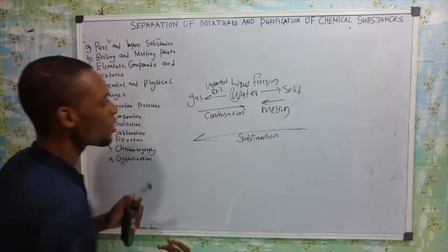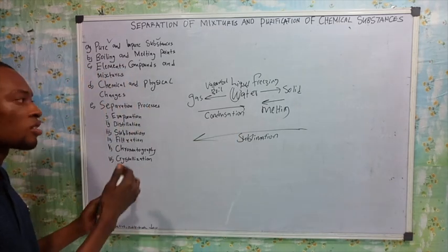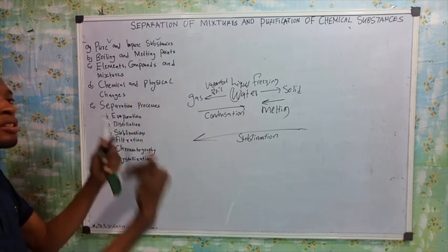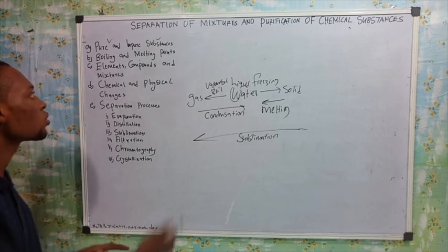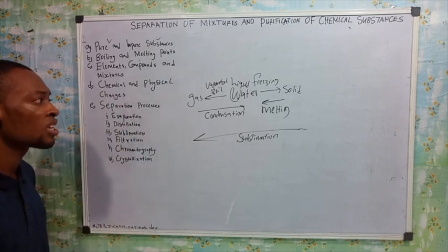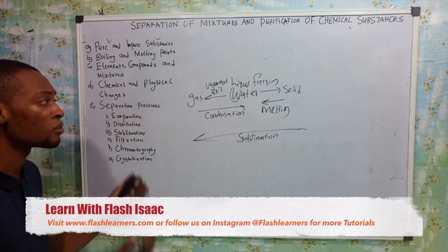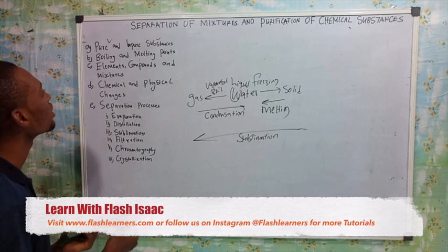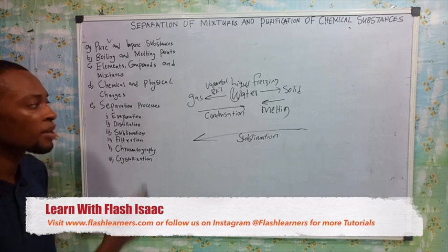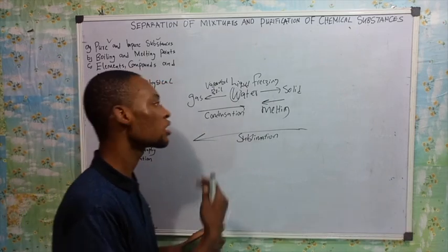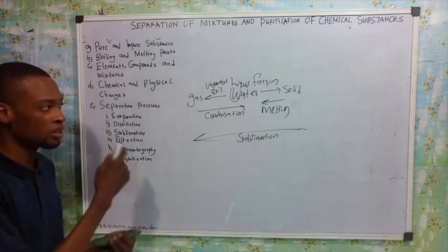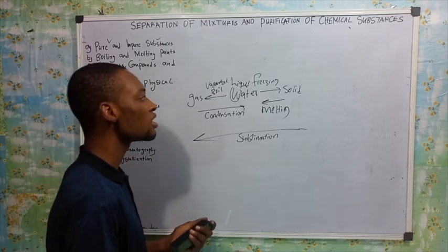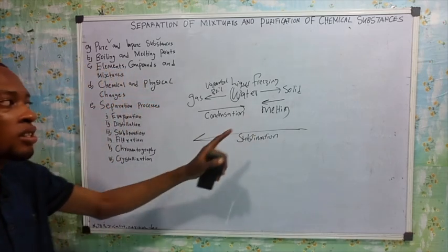When water boils it changes to gas, and at that state the liquid and gas states coexist. The boiling point is the temperature at which water changes from liquid to gas. In other words, the boiling point is the temperature at which the saturated vapor pressure is equal to the atmospheric pressure.